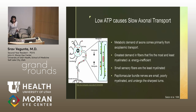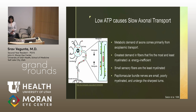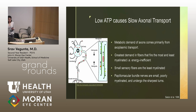The metabolic demand of axons comes primarily from axoplasmic transport and sodium-potassium pumps. The greatest demand for ATP comes from fibers that are the smallest and least myelinated — the least efficient fibers. These include small sensory fibers in our hands and feet, and the papillomacular bundle fibers, which are small, poorly myelinated, and undergo a sharp turn as they exit the optic nerve — requiring extra energy for axonal transport.